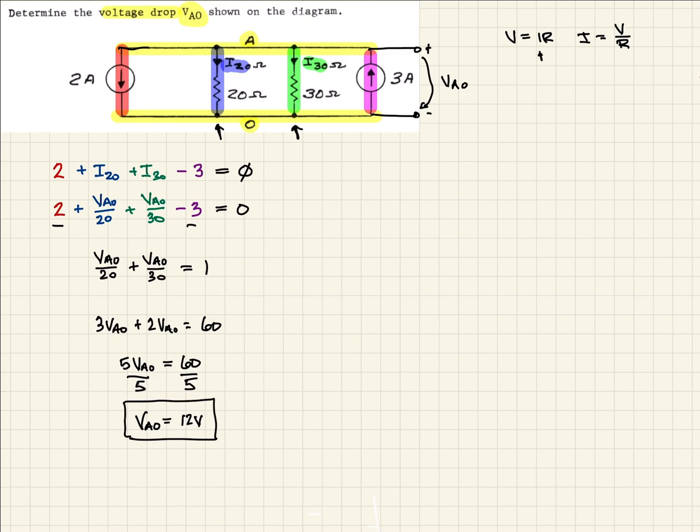There's our voltage drop across that circuit. We should be able to do a quick check here. We should be able to plug this number back into this equation and it equals 0, like it says.